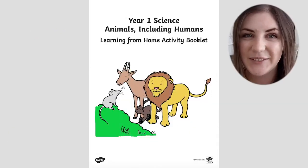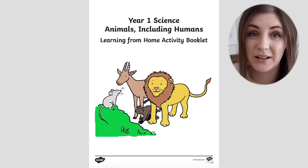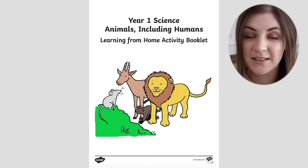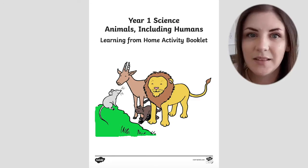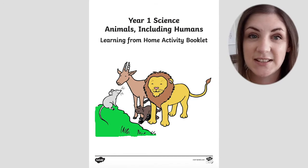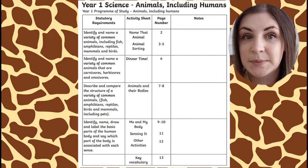Hi everyone, I'm Alana from Twinkle, and this is our home learning activity booklet for children in Year One, designed to help support learning on the topic in science of animals and humans. The main focus for science teaching in Key Stage 1 is for children to start to observe and experience the world around them.